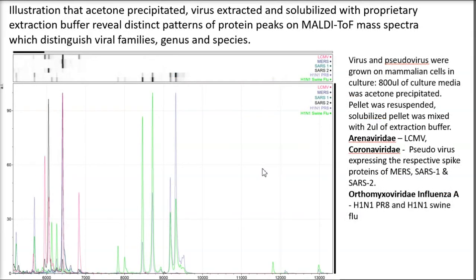The wider implications of this work is that we can look directly at viruses from biological samples. We extract them with acetone, and using our extraction buffer we can find viral protein fingerprint peptides, which not only distinguish one virus from another type of virus,